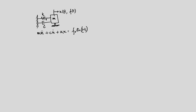We have a linear system excited by a harmonic force with frequency λ. In this case we also have initial conditions at t equal to 0 — displacement and velocity defined at t equal to 0, that is x₀ and x₀-dot.